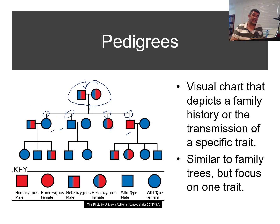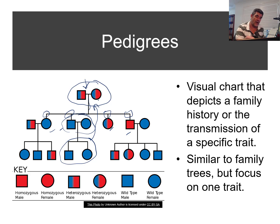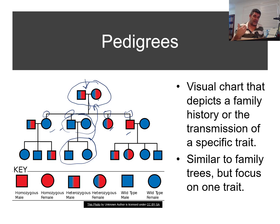Three of their four children have actually married. You can see another marriage here, and here are two children from this marriage — they would be grandchildren of our originals. From pedigrees you can identify familial relationships: parents, mothers, sons, daughters, uncles, aunts, cousins, grandparents, great-grandparents, grandchildren, and so on.